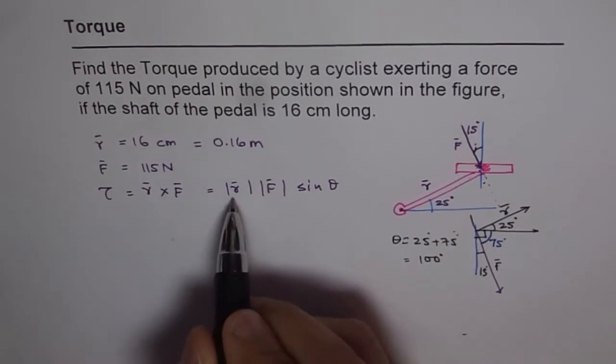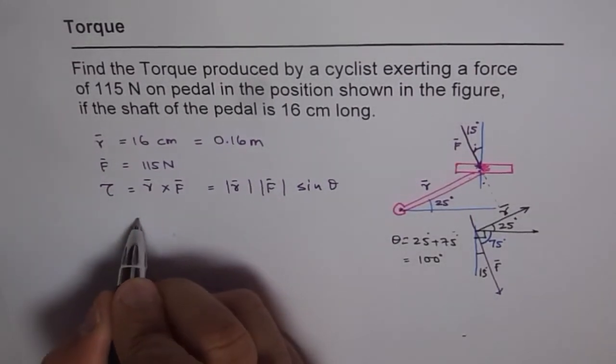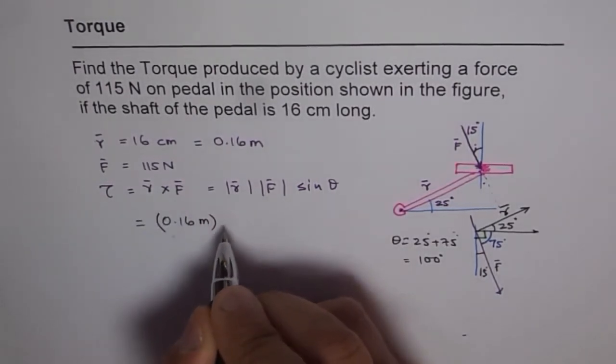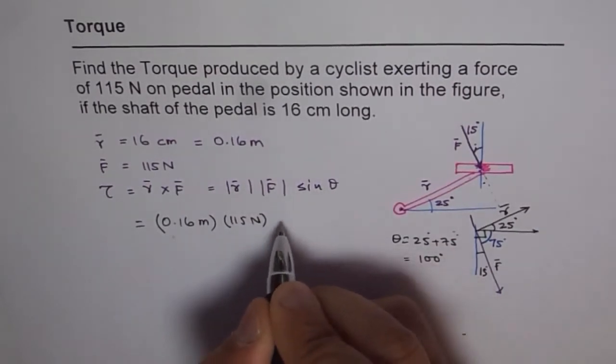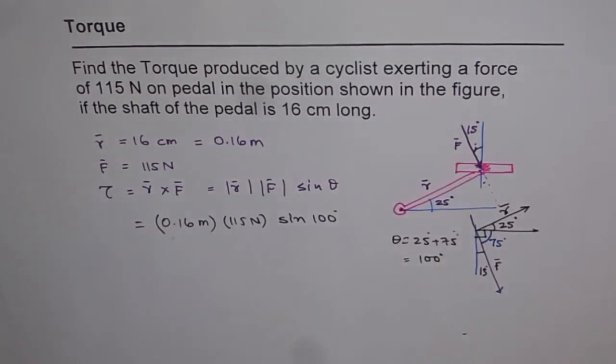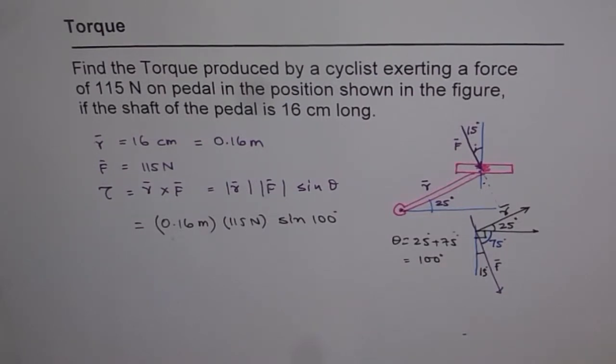So we have R already converted into meters most important. So which is 0.16 meters. And then we have force in newtons. 115 newtons. And now we know angle. So it is sine of 100 degrees. And now we can use our calculator and find the answer. So that's it. So in torque examples spend time in making a vector diagram. And then it is easy. Times 115 times sine of 100. And what we get 18.12. So that is what we get 18.12.